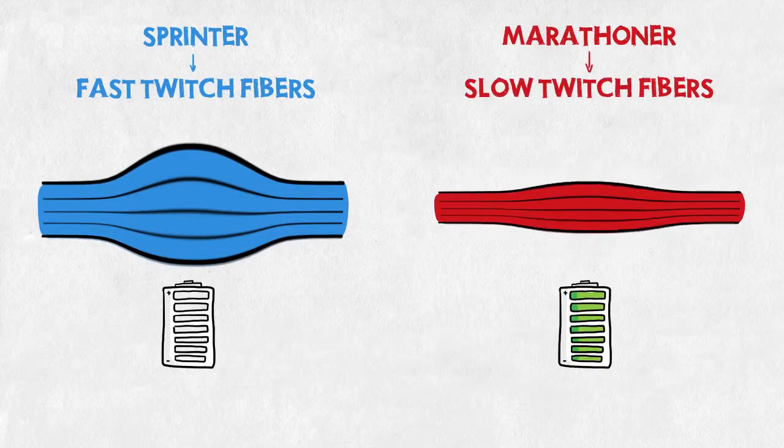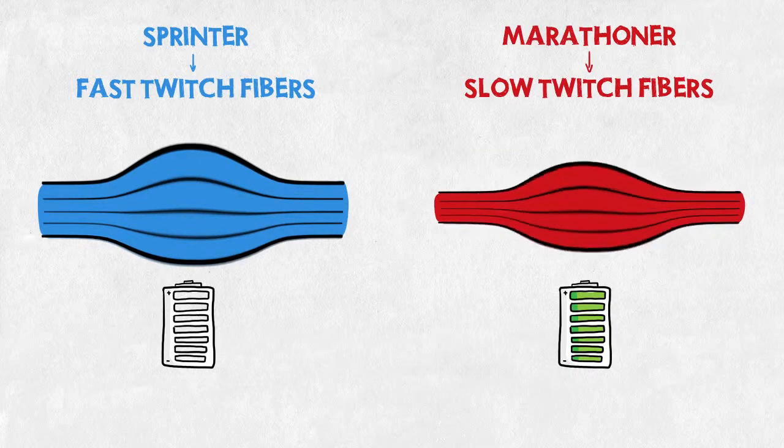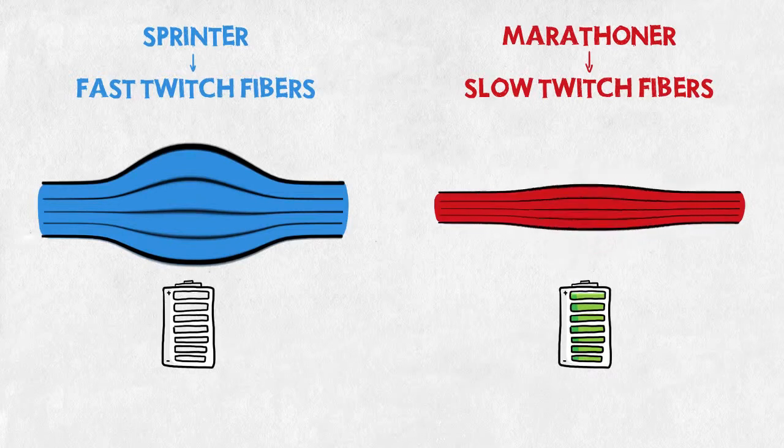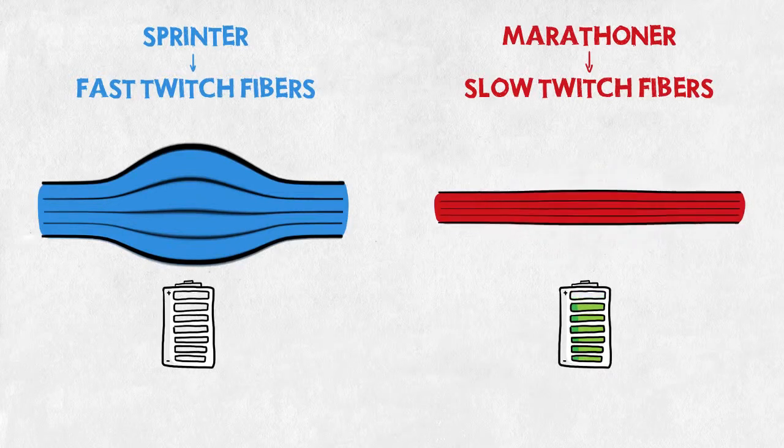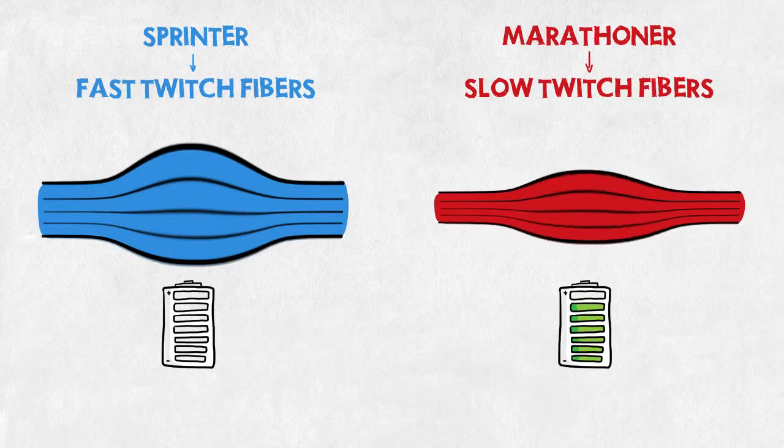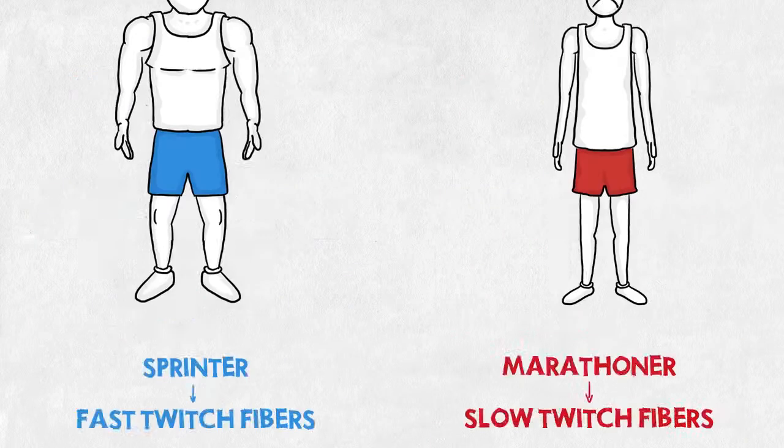On the other hand, a marathoner uses mostly his slow twitch fibers, not as reactive and speedy as their fast twitch brothers, but they can work nonstop for hours. Even when trained, these fibers remain slim and light.